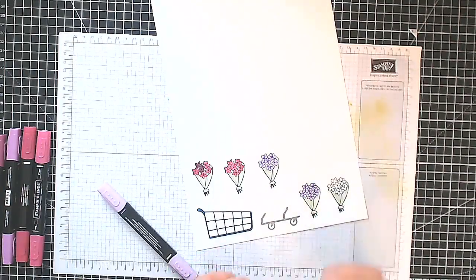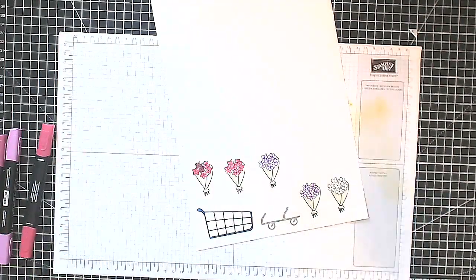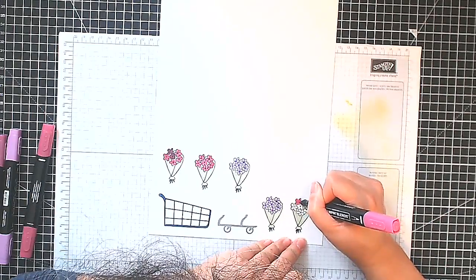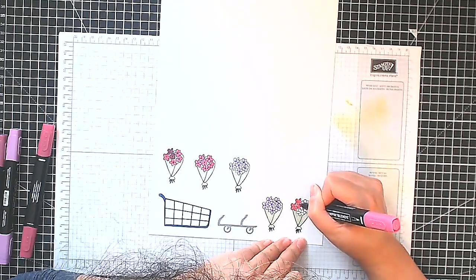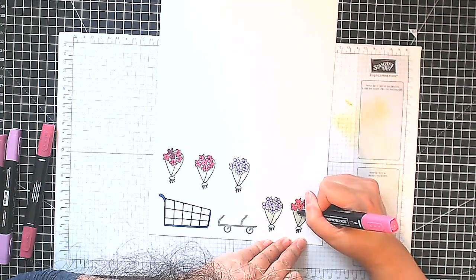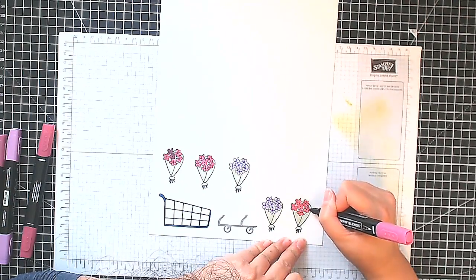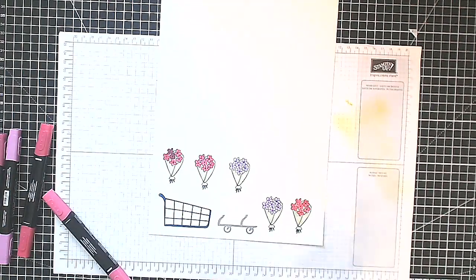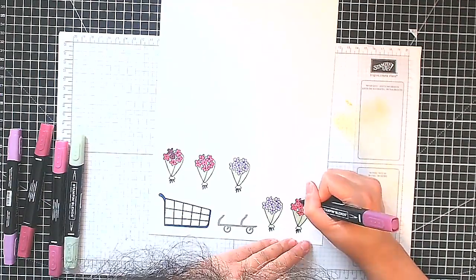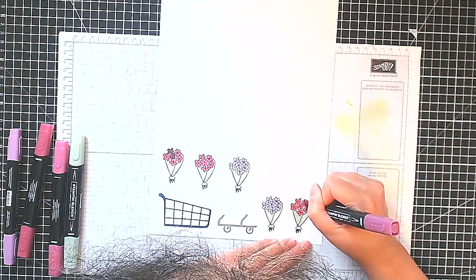Then we're going to go here and finish coloring our flowers as you can see. I think I'm going back here to Berry Burst for my last lot of flowers. The Berry Burst is the deeper color, the Highland Heather is the lighter one and I think the two colors go very well together.